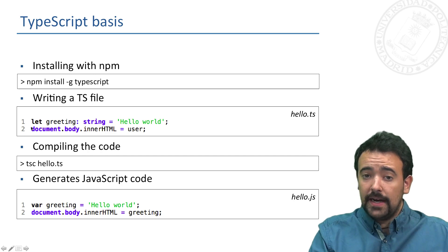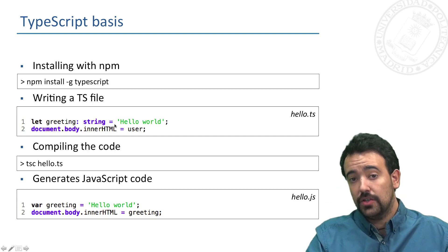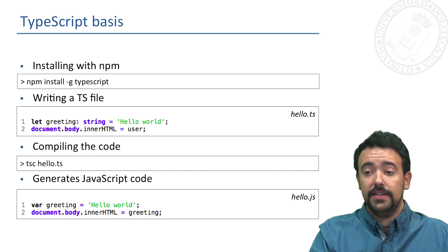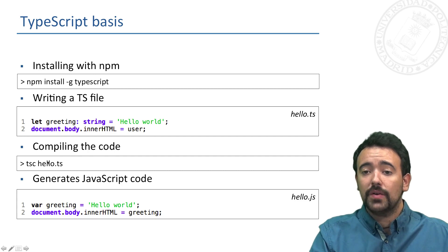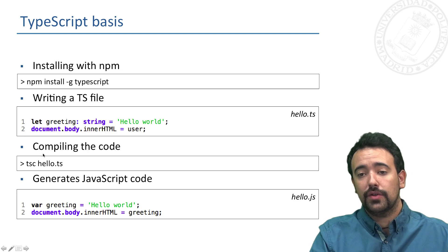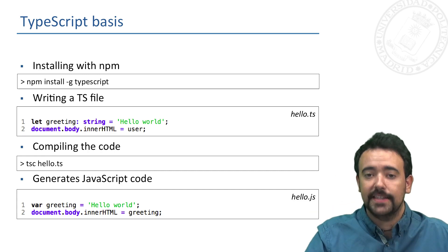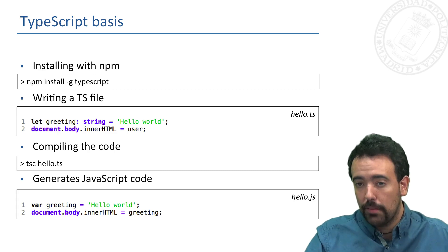For writing a TypeScript file, we have to use .ts files instead of .js as we do for JavaScript, and we can compile the generated code using this simple order. This will generate a JavaScript file that we could serve and that is totally understood by the web browser.